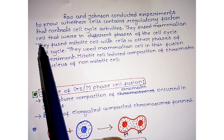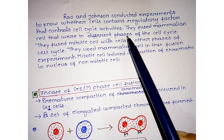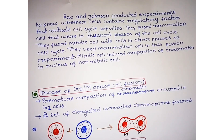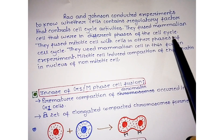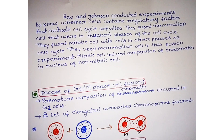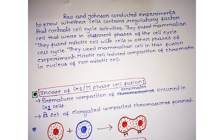Rao and Johnson fused mammalian cells that were in different phases of the cell cycle. They took mammalian cells and performed fusion experiments between cells at different stages. Specifically, they fused mitotic cells — meaning cells present in M phase — with non-mitotic cells, which are cells present in other phases like G1, S, and G2 phase.